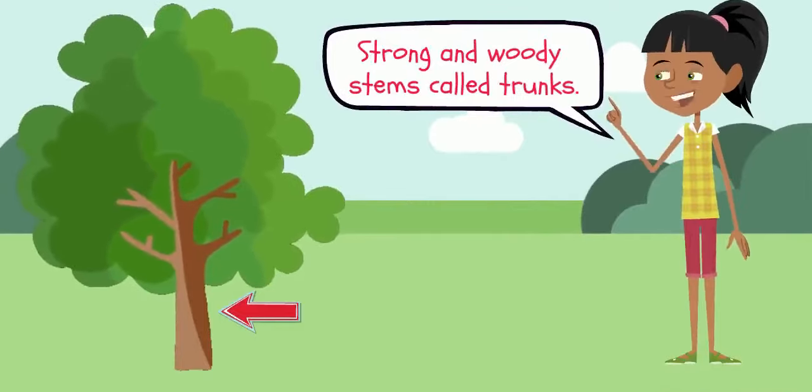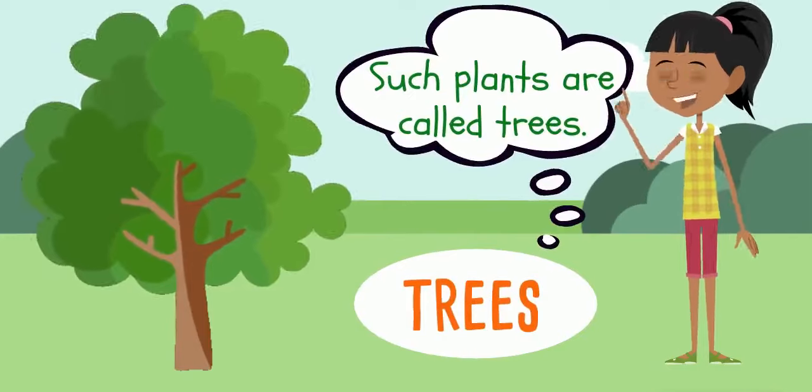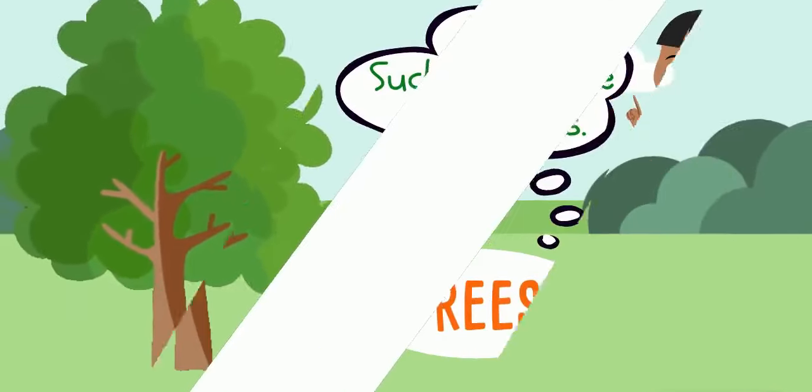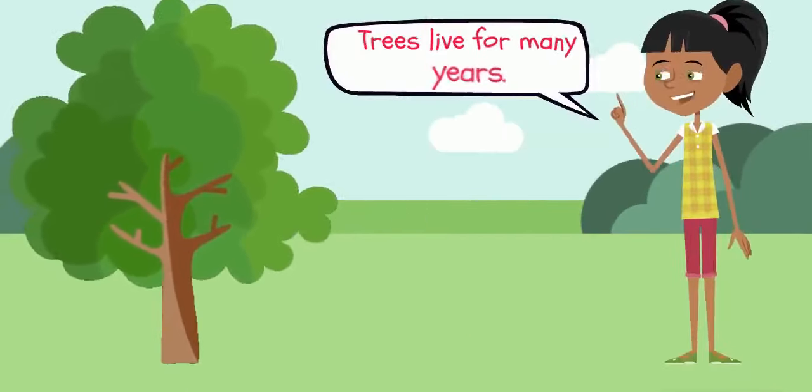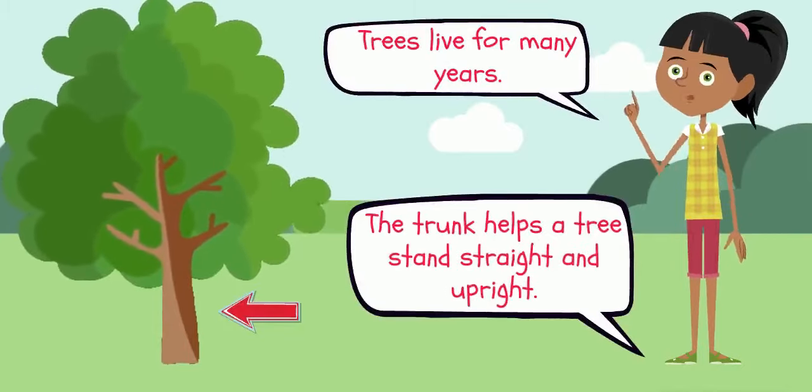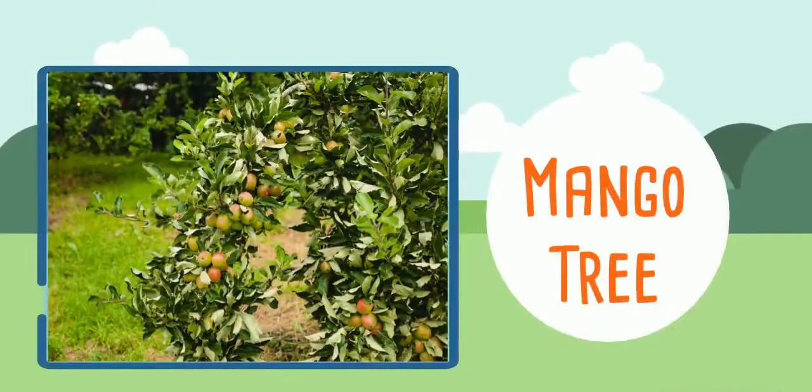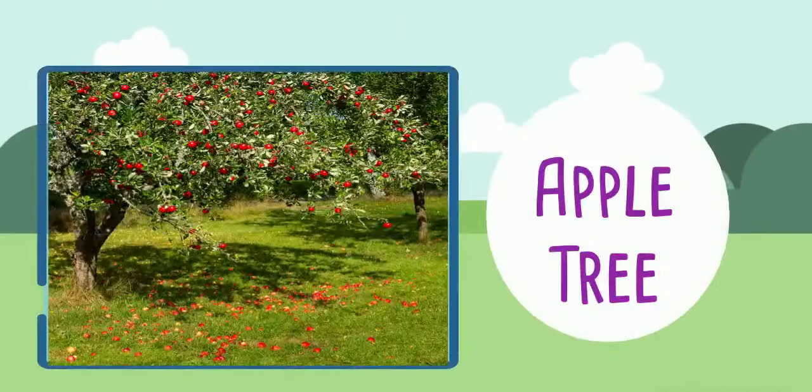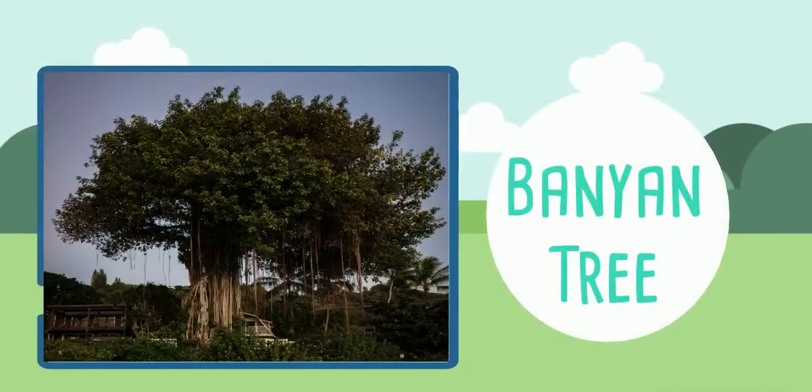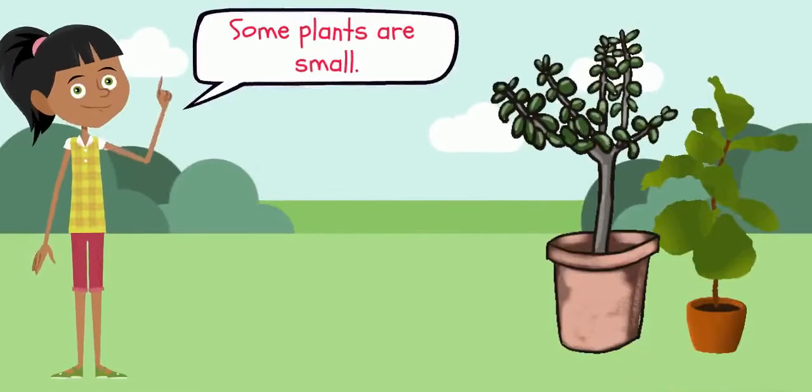These woody stems are called trunks. Such plants are called trees. Trees live for many years. The trunk helps a tree stand straight and upright. Mango, apple, and banyan are some examples of trees.